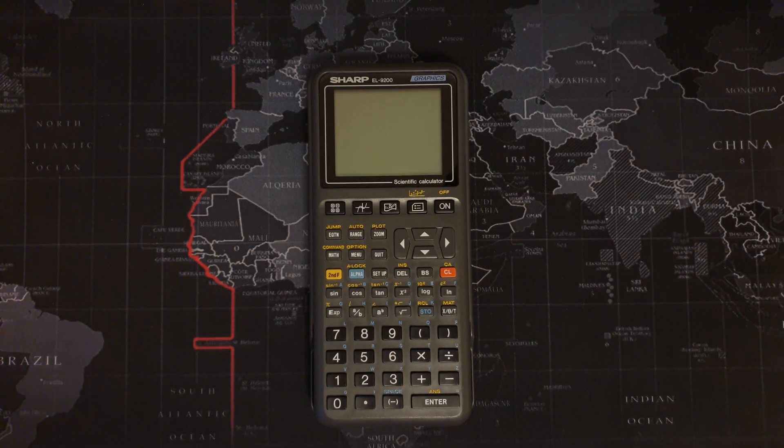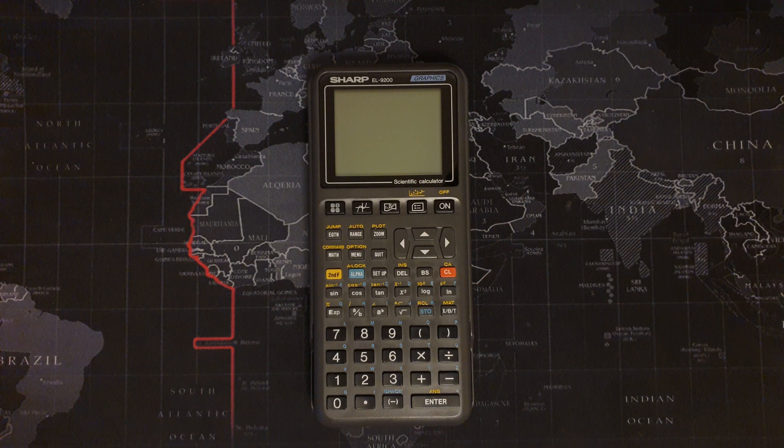And that folks wraps up my review of the Sharp EL9200. So it is slower than a calculator that is 10 years older than it. It is the same speed with a complex mathematical formula as a calculator that is 15 years older than it. It's slower than a computer which is 10 years older than it. But luckily, it's faster than the ZX Spectrum.